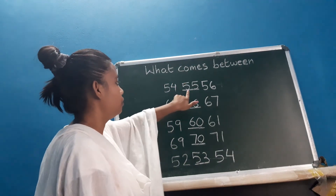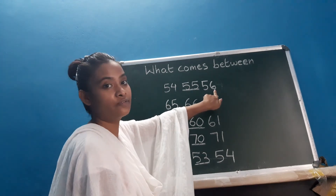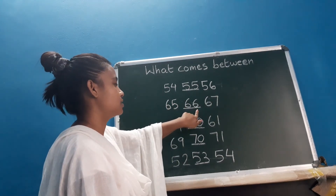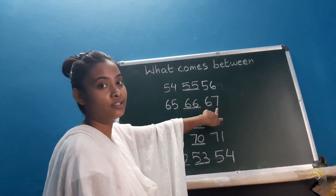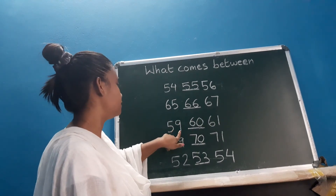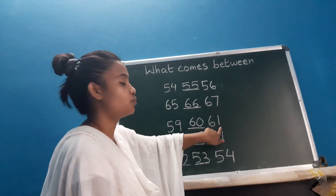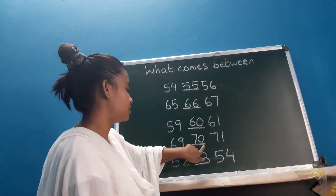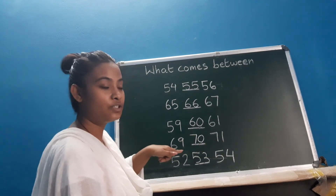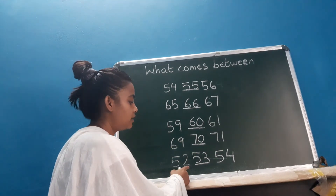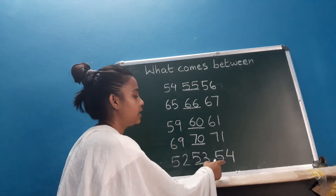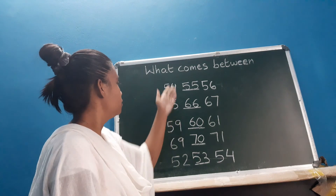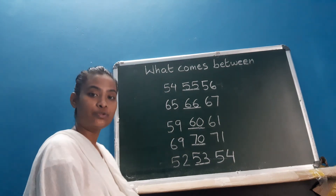Once more — let's review all answers: 54, 55, 56. Then 65, 66, 67. Then 59, 60, 61. Then 69, 70, 71. And the last one: 52, 53, and 54. So these numbers will come in between.